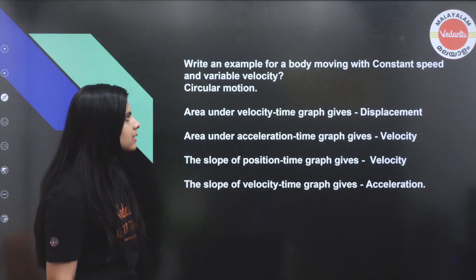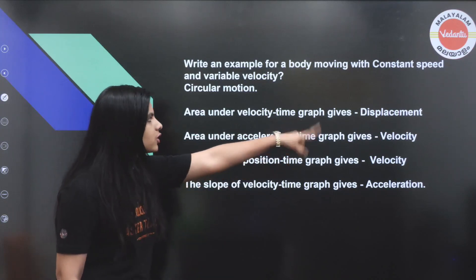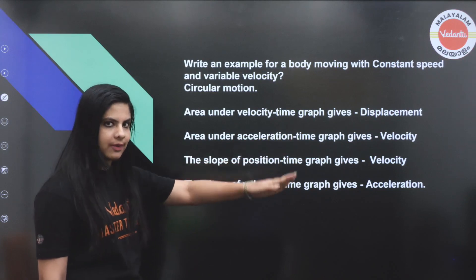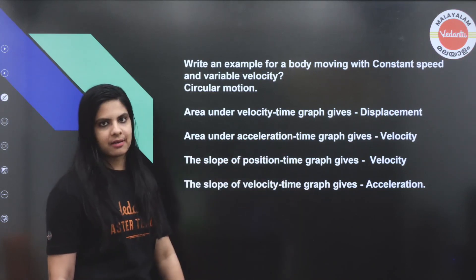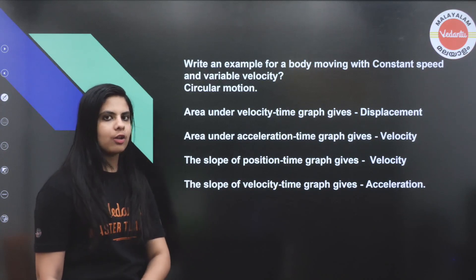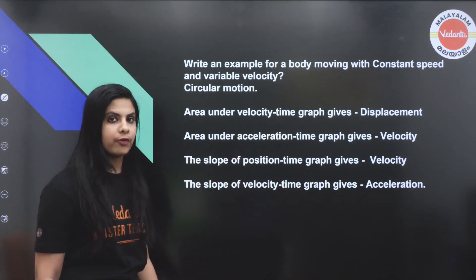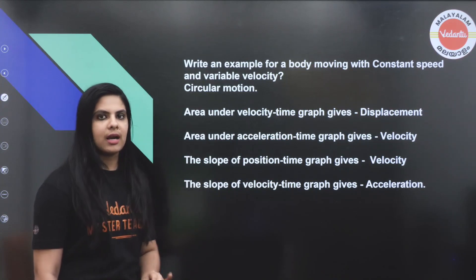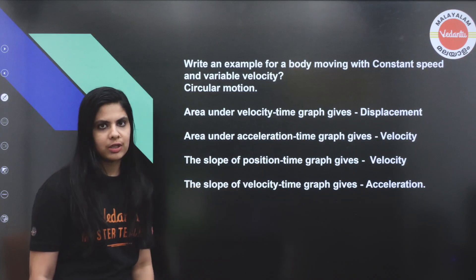Area under velocity-time graph gives displacement. Area under acceleration-time graph gives velocity. The slope of a position-time graph gives velocity. The slope of a velocity-time graph gives acceleration. These are very important concepts in kinematics.